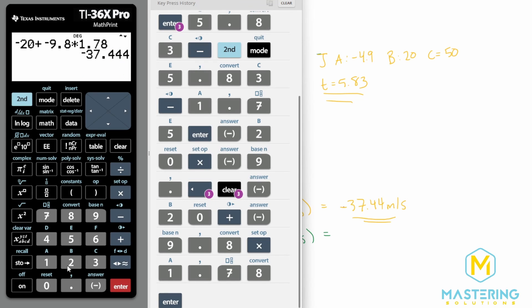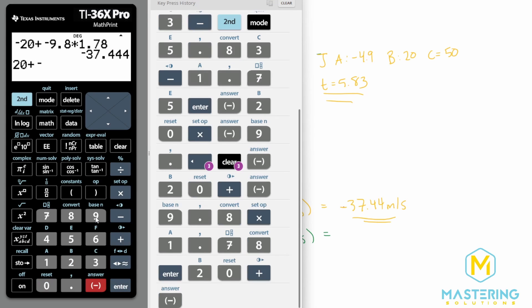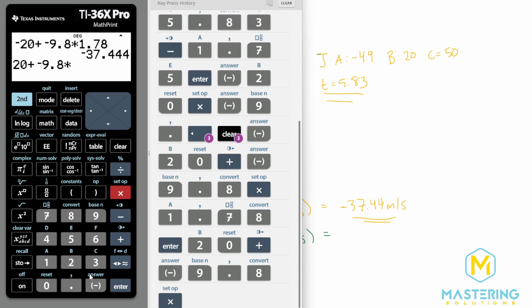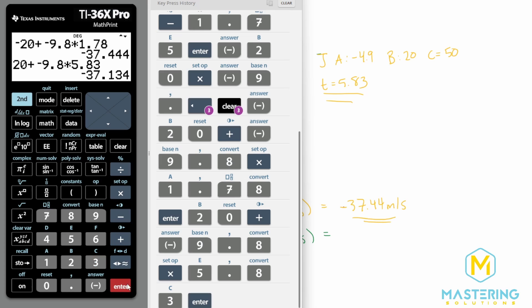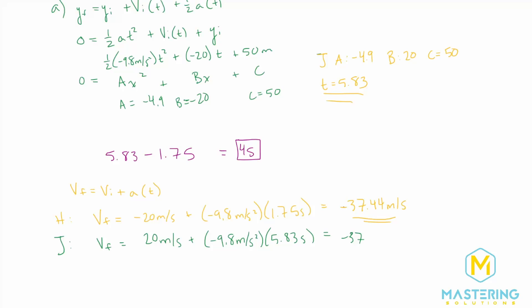So we have 20 plus negative 9.8 times his time, which was 5.83. We have that negative 37. And if we would have kept the numbers going more instead of rounding just to the 5.83 and the 1.75, they would be identical. We have negative 37 rounded, and this one will also be negative 37 rounded.